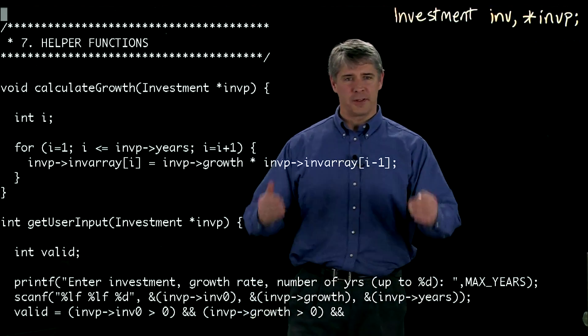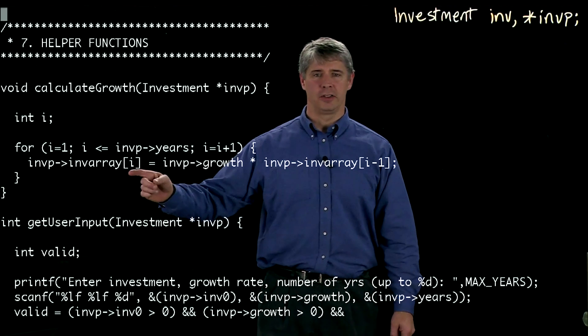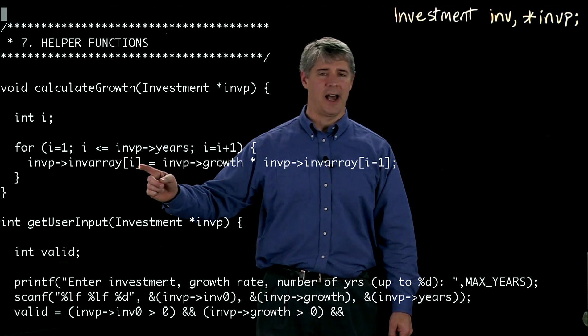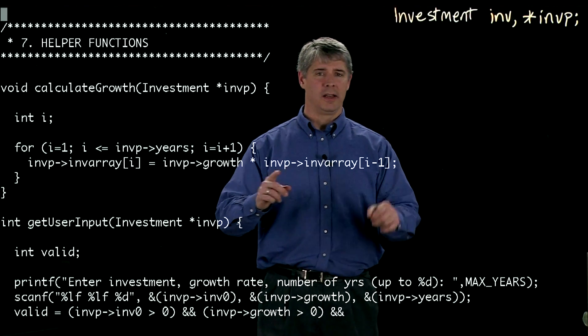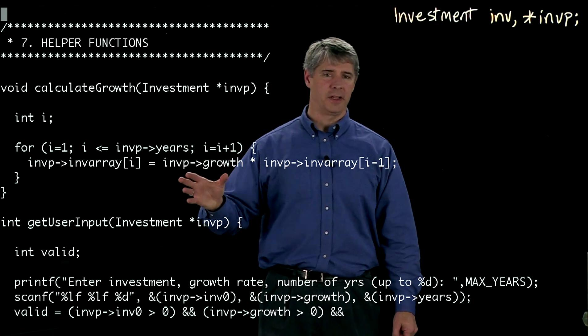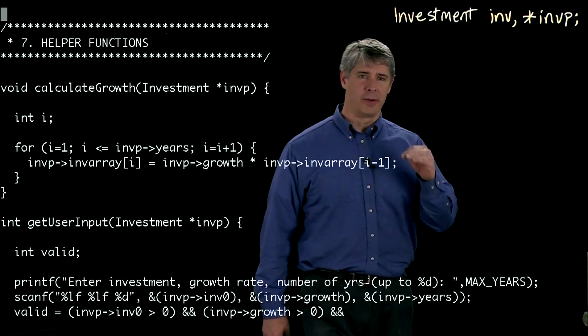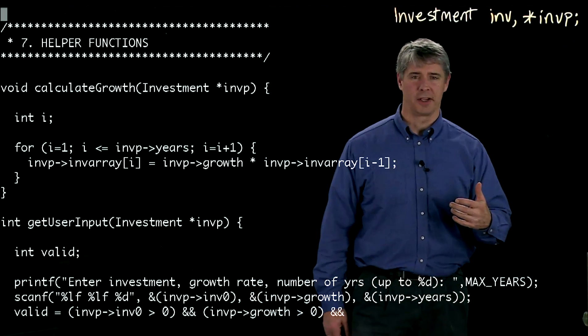And then if it's true, if it's still one of the years we're trying to track, all you do is you fill in the element i of the array with the element i minus one times the growth. And that's it. So it's going to fill in all of the elements of the array with the value of the investment in that particular year.